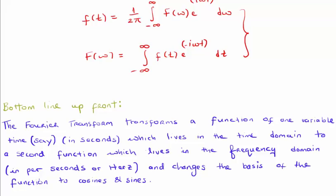The bottom line up front about the Fourier transform is that it transforms a function of one particular variable, let's say time, which might be measured in seconds and this would live in the time domain. And it would be transformed into a second function which lives in the frequency domain and would be measured in per seconds or hertz where the input function was one of time.